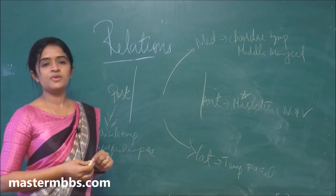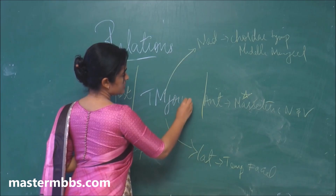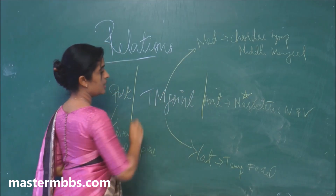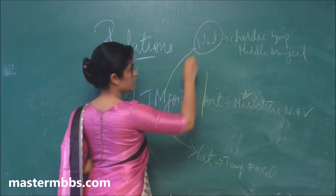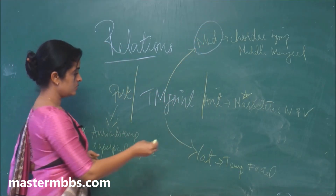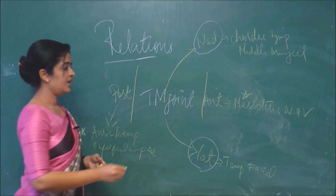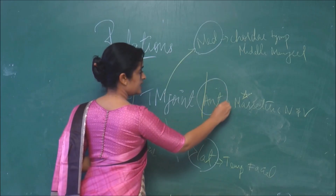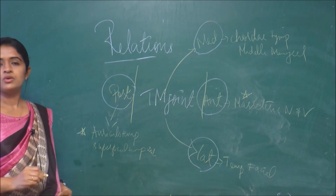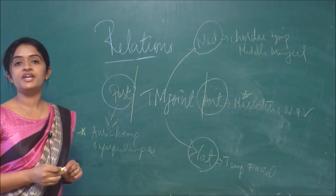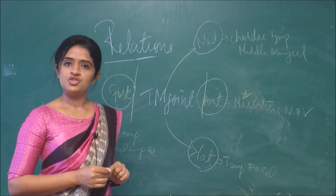For the temporomandibular joint, we can consider the relations under four headings: one, the relation coming medial to the joint; two, the relation coming lateral to the joint; three, the relation coming anterior to the joint; and four, the relation coming posterior to the joint. This way we get an idea of which important structures lie in close contact with the joint.